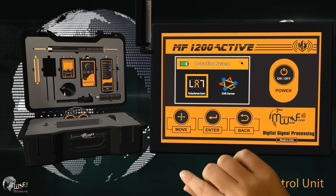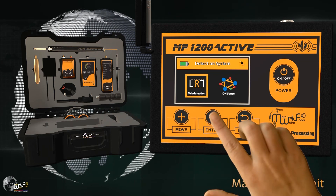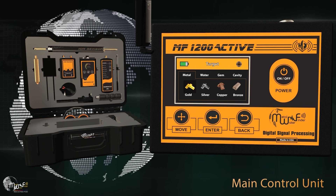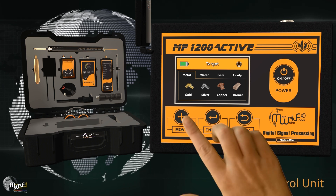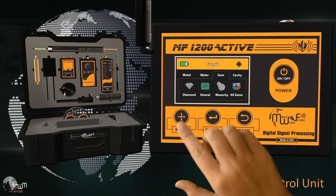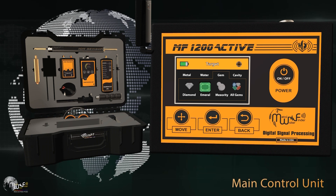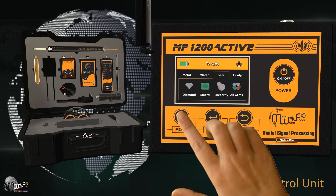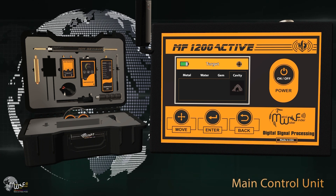Select the remote detection system to display four main target menus: the metal list including gold, silver, copper, and bronze; the water list including natural water, mineral water, salt water, and all types of water; the gems list including diamond, emerald, meteorite, and all types of gemstones; and the cavities list for detecting caves, voids, and tunnels.